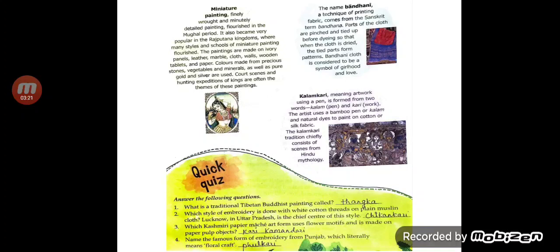Miniature painting is a finely wrought and minutely detailed painting that flourished in the Mughal period. It also became very popular in the Rajputana kingdoms. These paintings are made on ivory panels, leather, marble, cloth, walls, wooden tablets, and even paper. Colors made from precious stones, vegetables, and minerals, as well as pure gold and silver, are used. Court scenes and hunting expeditions of kings are often the themes.